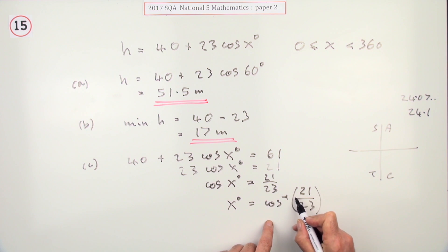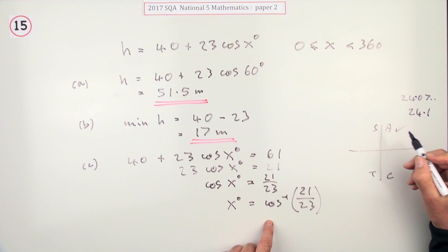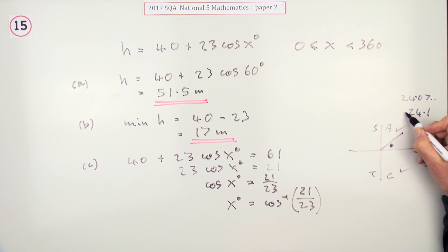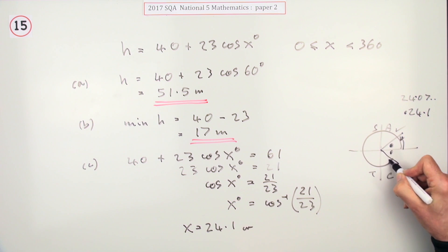Then where could it be? The cosine is positive, so it's either in the first quadrant or the fourth quadrant. So that 24 is either here or it's here. So the angles are either 24 as it says - so x is either 24.1 - or for the other time it'd be the angle all the way around to here, which is 360 minus it, which would be 335.9.